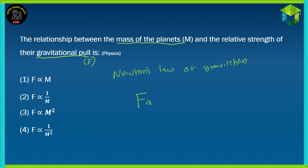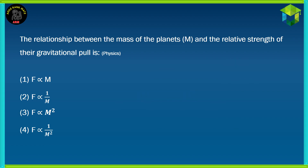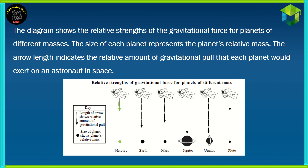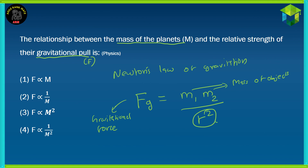Newton's law states that the gravitational force is equal to mass 1 into mass 2 divided by the distance squared. Both of these are the masses of the objects, and this is the gravitational force. Now, if we look at something which is common, we can see that the distance between the astronaut and the planet in all cases is the same. So that means if you have to check for each planet, this R squared will remain the same.